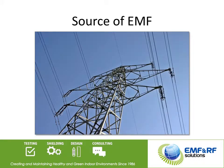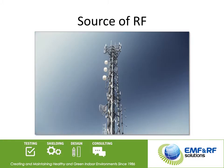The main outdoor low-frequency sources — let's call it EMF — are power lines, substations, and transformers. The main high-frequency sources — let's call it RF — are cellular antennas, radio and TV broadcasting, and adjacent Wi-Fi sources.